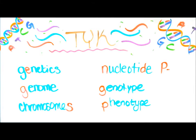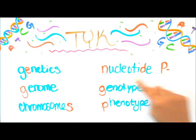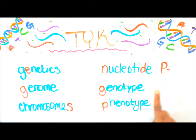Now it's time to test your knowledge on the terms we went over and studied. We have genetics, genome, chromosomes, nucleotide — N, D, P — genotype, and phenotype. Use the red letters to help you remember what these terms mean.